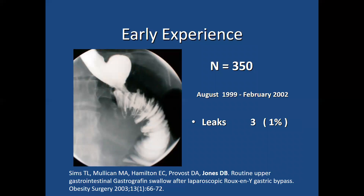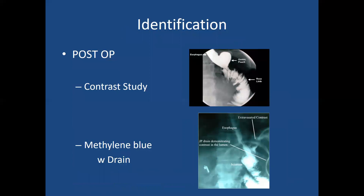Early in my experience with Roux-en-Y gastric bypass between 1999 and 2002, I routinely did barium swallows. You can see the contrast study demonstrating the pouch to the anastomosis. Early in my experience with 350 cases, I had a 1% leak rate. You can see contrast with gastrographin showing a small extravasation. Because the leak rate became so low, I switched to methylene blue — placing a drain in the left upper quadrant and having the patient swallow 30 cc's of saline with methylene blue to check for any colored fluid from the drain. Ultimately I abandoned both gastrographin and methylene blue swallow tests as the leak rate became extraordinarily low.